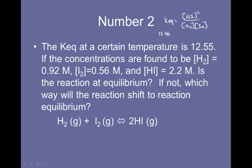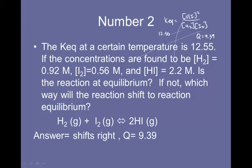We put H2 in, 0.92, I2, 0.56, and HI, 2.2, making sure, of course, to square the numerator. When we do, we get the number 9.39. So Q is 9.39. But you'll notice that that number, Q, is less than the KEQ. In other words, the reaction has not reached equilibrium yet. We would like the number to get bigger. Therefore, we have to produce more products to do that. And that's why the reaction shifts to the right to achieve equilibrium.